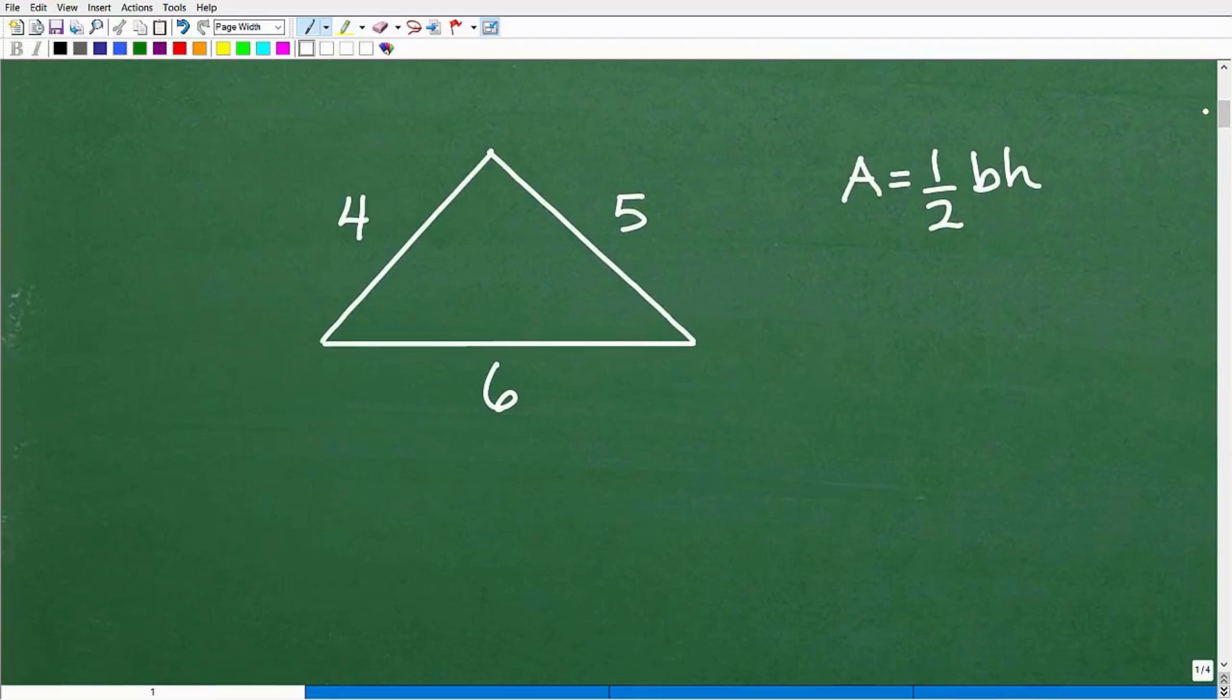So here is our triangle and here is our trusty formula. Area equals one half base times height. So again, if you were thinking, oh, I know how to find the area of a triangle, I use this formula. The problem is with this particular formula, you need these two pieces of information. So you need the base. Now, any one of these sides could be the base. If I kind of rotate the triangle, and I don't want to kind of get too far into too many side topics here,